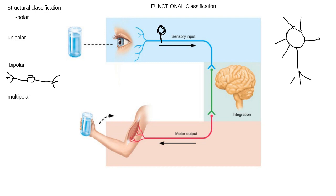When we talk about the functional classification, there are three kinds of functions that neurons do. The first is a sensory function — collecting sensory information such as seeing a cup, feeling it is cold, or stepping on something painful. A sensory neuron only collects information — it doesn't process it at all.